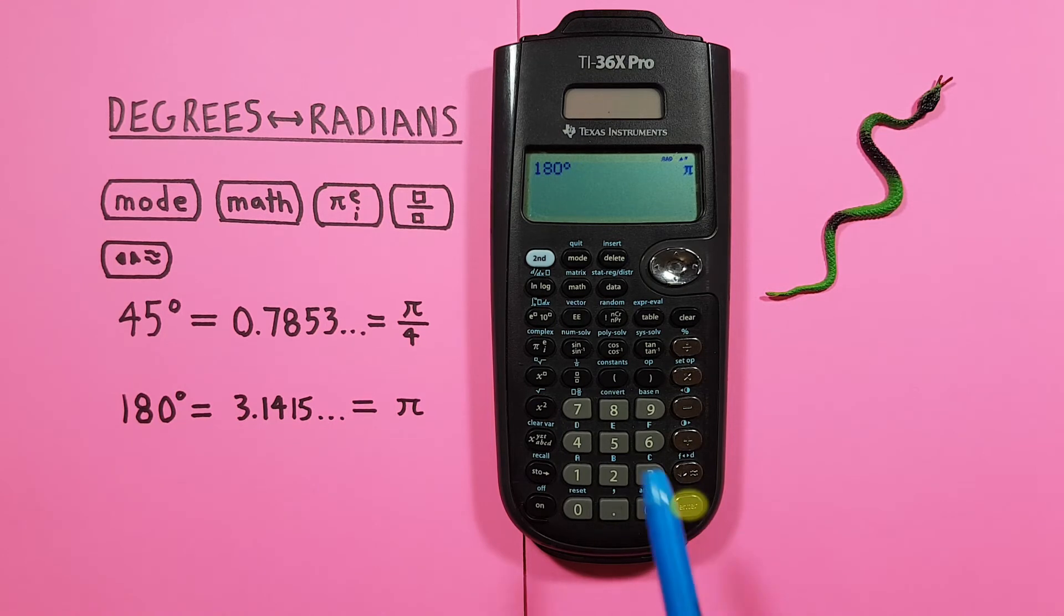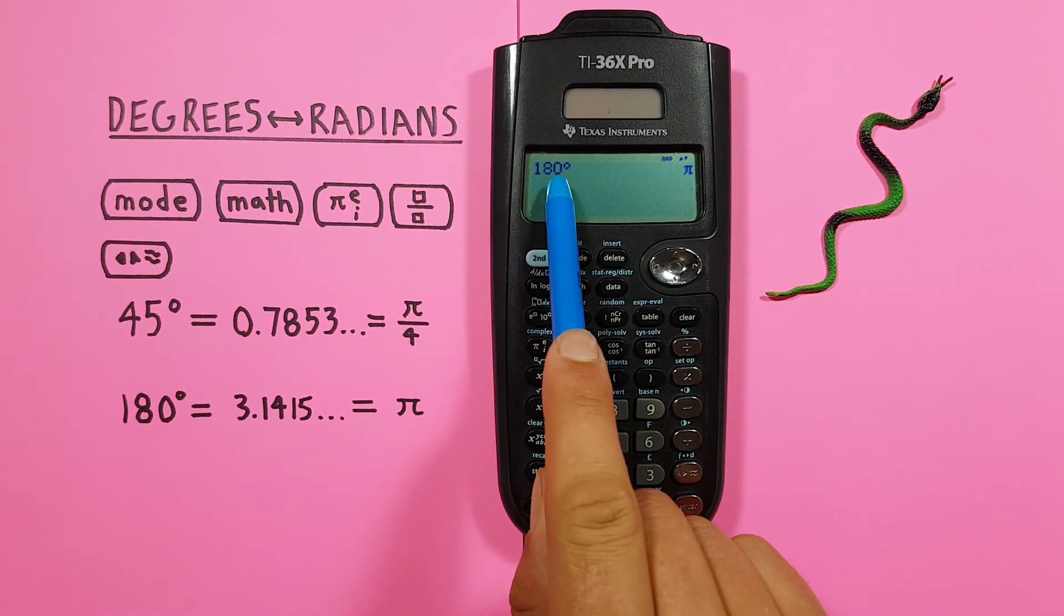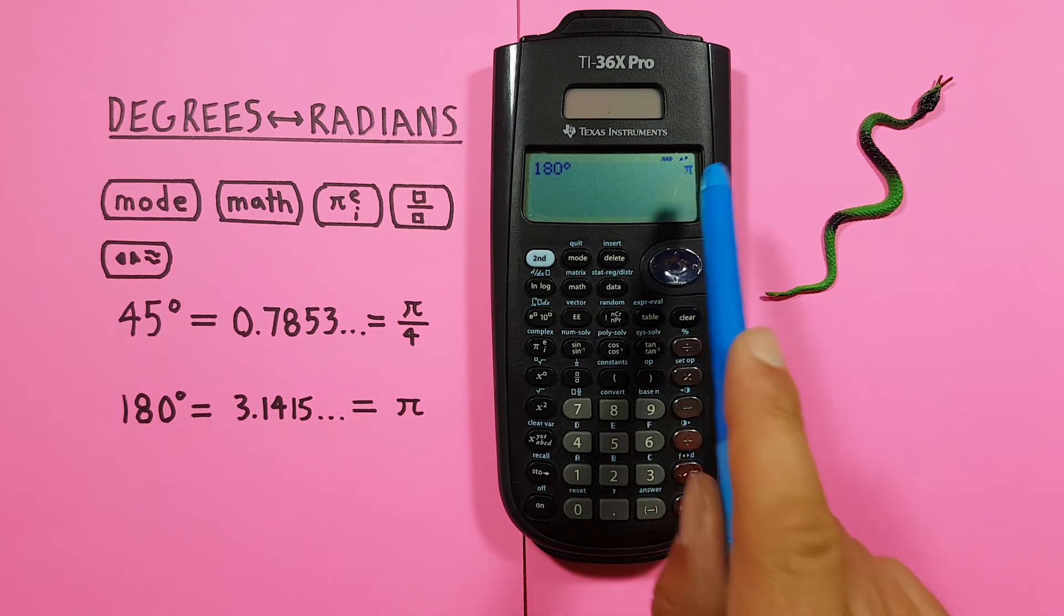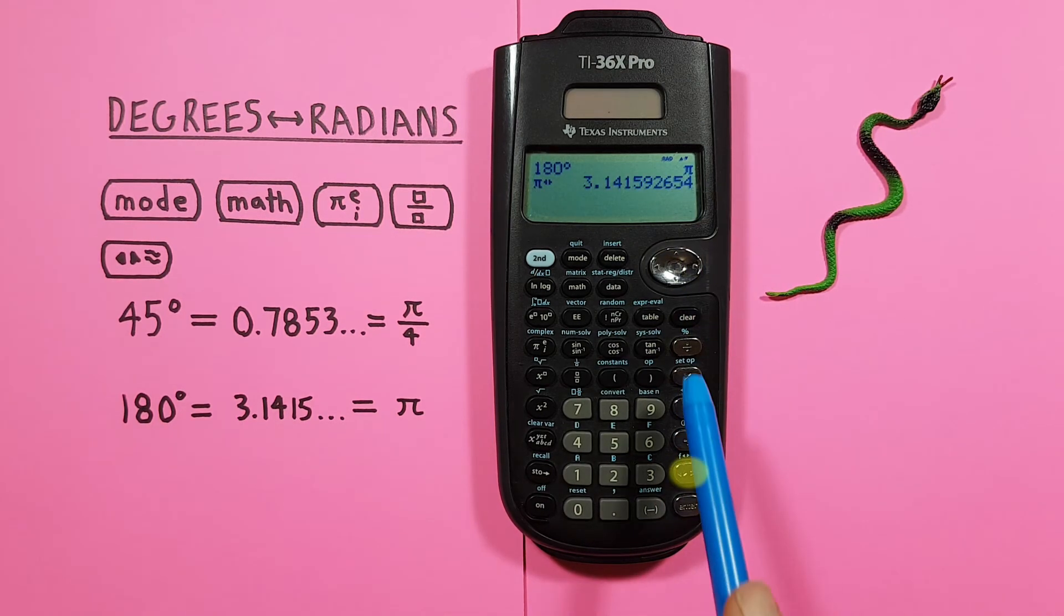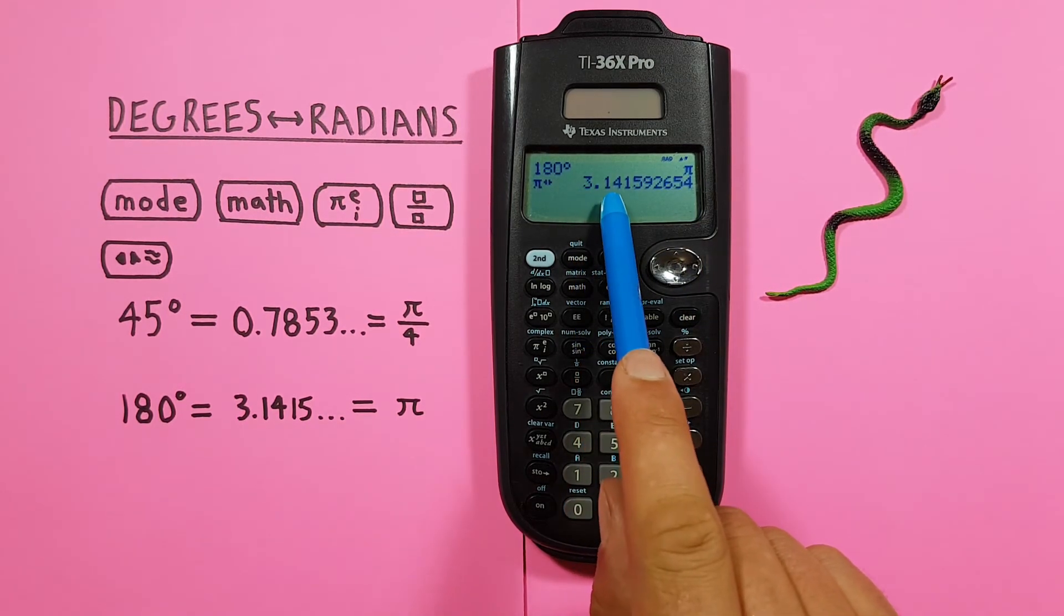Pressing Enter again. And see we get 180 degrees is equal to PI. Which if we convert to a decimal is equal to 3.1415 etc.